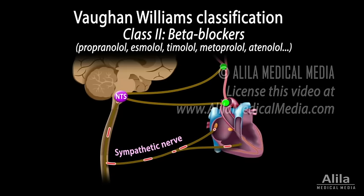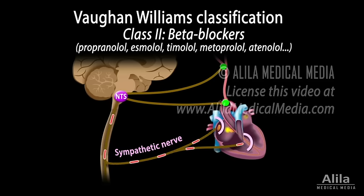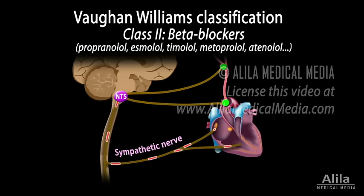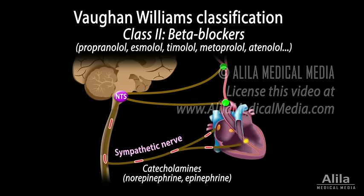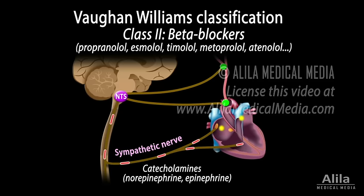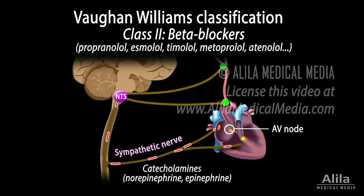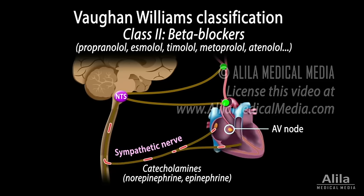Class 2: beta blockers. These drugs bind to beta-1 adrenergic receptors and block the sympathetic influences that act through these receptors. Sympathetic nerves release catecholamines, which act to increase SA node firing rate and cardiac conductibility, especially at the AV node. These activities may precipitate arrhythmias. Beta blockers suppress sympathetic effects, thereby decreasing heart rate and slowing down conduction through the AV node. The latter is particularly useful in treatment of tachycardias that originate upstream of the AV node, known as supraventricular tachycardias, or SVT.